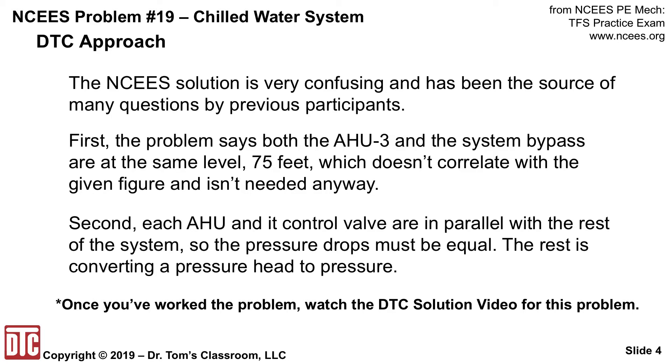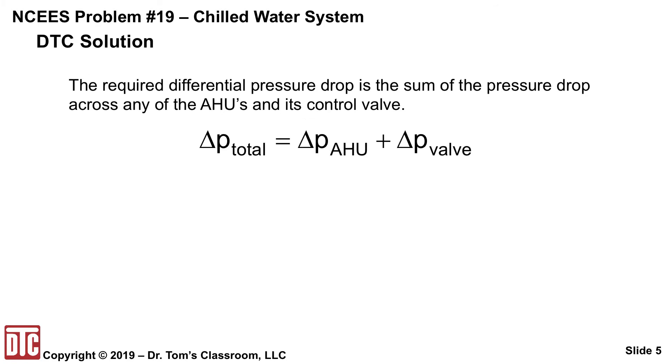Okay, let's see what we really need to do here. Well, the required differential pressure drop is the sum of the pressure drop across any of the AHUs and its control valve. So the total pressure drop is ΔP_AHU plus ΔP_valve, and we're given the valve is 5 psi.